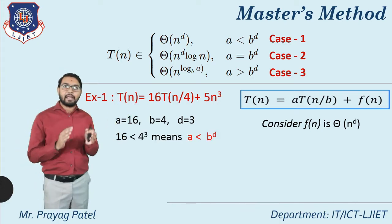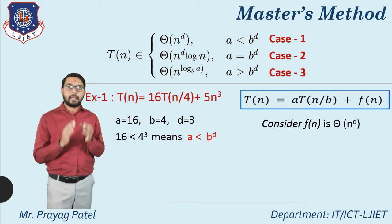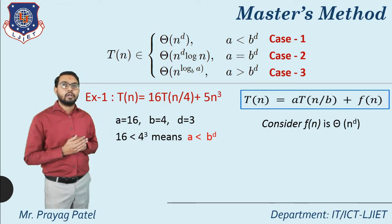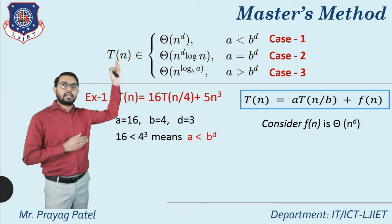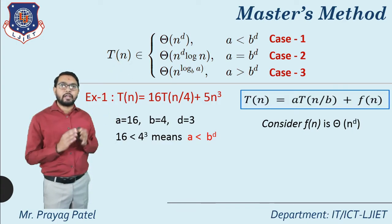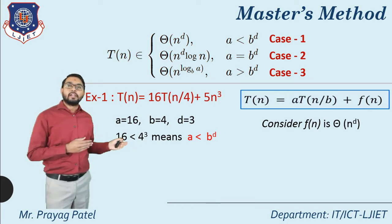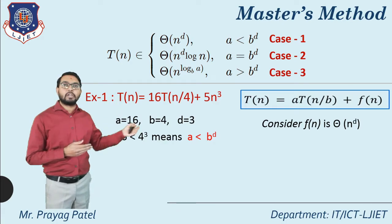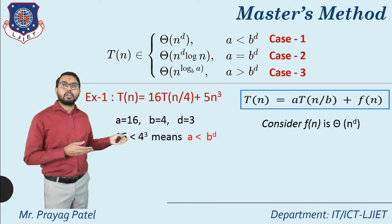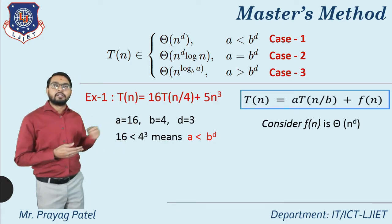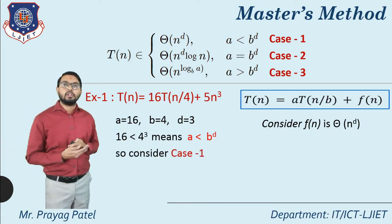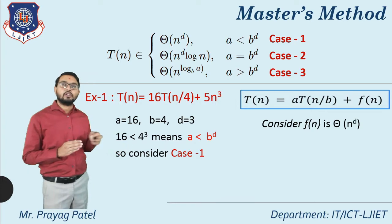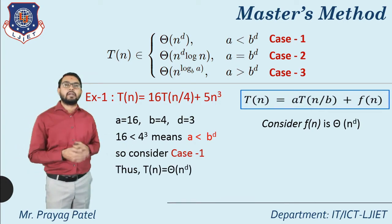Now compare a with b^d. Here a = 16 and b^d = 4^3 = 64. Since 16 < 64, we have a < b^d, so case 1 is applicable.